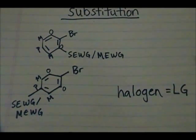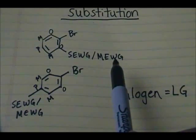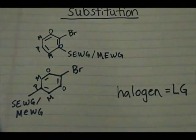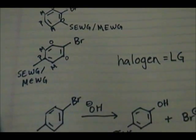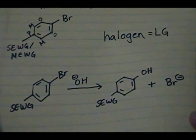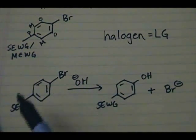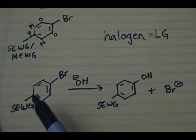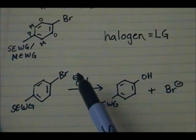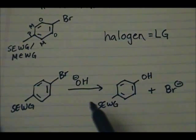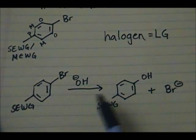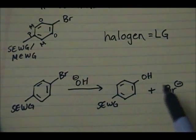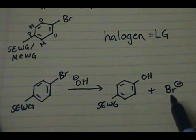So that's the main criteria — you need to have a strong electron withdrawing group or a moderate electron withdrawing group in the ortho or para position relative to the bromine. The reaction looks like this: you have a strong electron withdrawing group in the para position relative to the bromine, and you're substituting an OH group into the system. The product has the OH group where the bromine used to be, and you generate Br⁻.